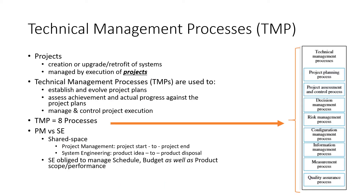To put things in context for the Technical Management Process, all systems and products that are developed are developed in projects. A project is a unit of measurement that we use to describe how things are developed. The Technical Management Process revolves around the definition of projects, how they're developed, how they're managed, and how they're executed.